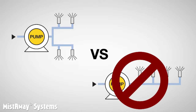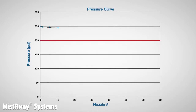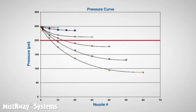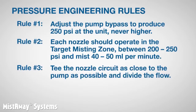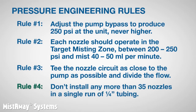What else can we learn? Check out this important chart, where we plot the pressure curve for a number of different run lengths, with our target minimum pressure of 200 psi. Starting with 10 nozzles in series — all well above the red line — then the 20 and 30 nozzle curves: all nozzles still above 200 psi, but getting close. Adding the 40, 50, and 60 nozzle curves, you can see that a run of 40 drops below the line, and 50 and 60 are really far below it. Splitting the difference between the 30 and 40 nozzle lines gives a single-run maximum of 35 nozzles. Rule number 4: don't install any more than 35 nozzles in a single run of quarter-inch tubing.